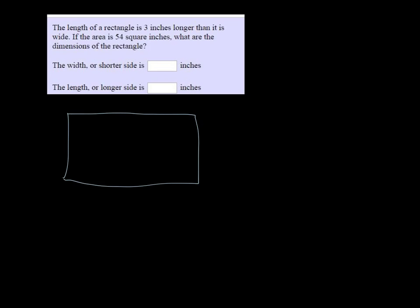So the length of the rectangle is three inches longer than its width. So if I let the shorter sides be the width, then the length is going to be w plus three.